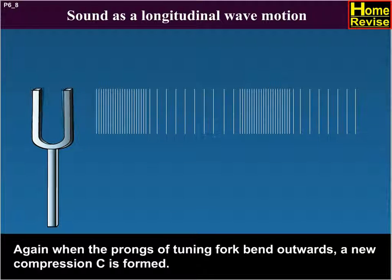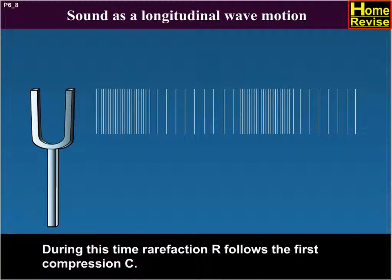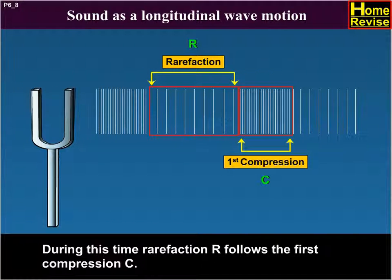Again, when the prongs of tuning fork bend outwards, a new compression C is formed. During this time, rarefaction R follows the first compression C.